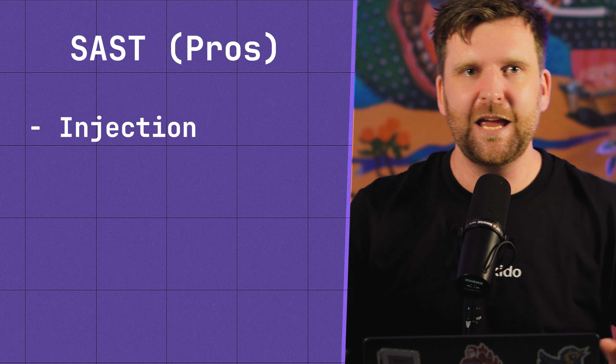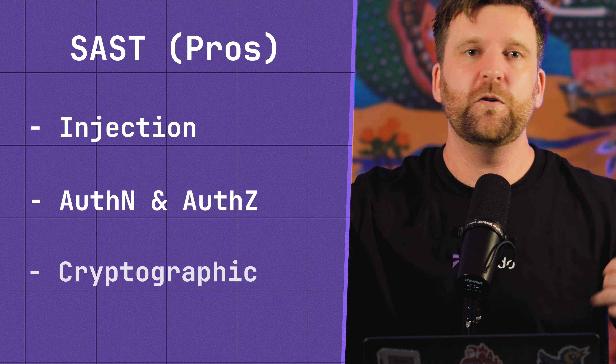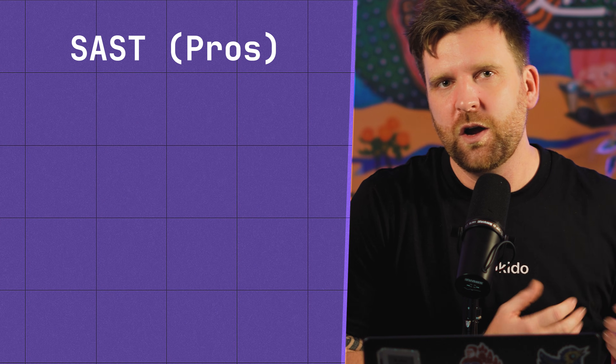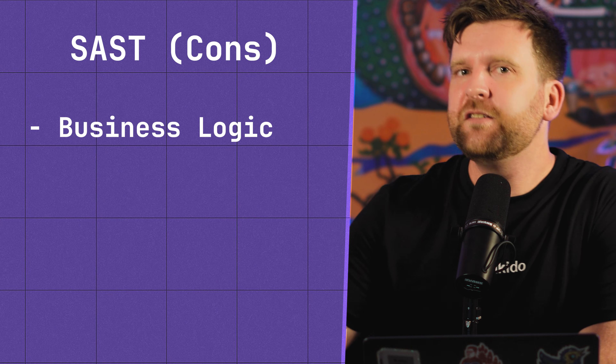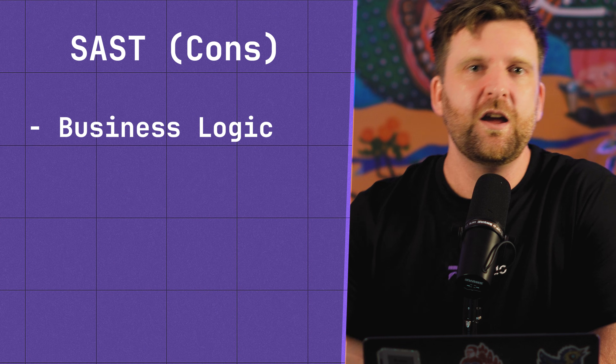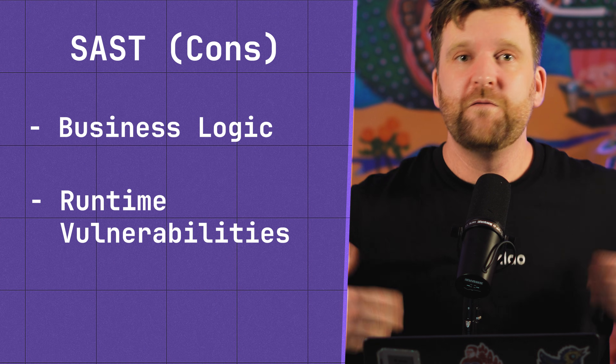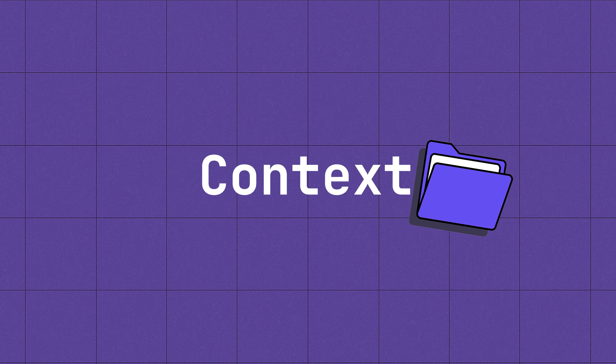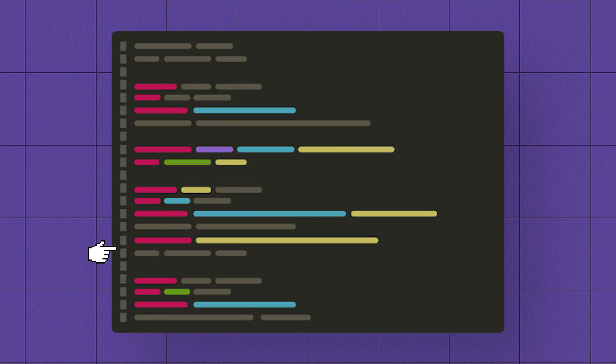SAST can be at the very start of this process, which makes it really powerful. Where it fails is that it has very limited context. SAST is great at finding coding issues that may lead to injection, authentication or authorization issues, and cryptographic issues. What it's really bad at finding is business logic flaws, runtime vulnerabilities, and vulnerabilities in your dependencies — because it's more or less looking at your code line by line as you write it.